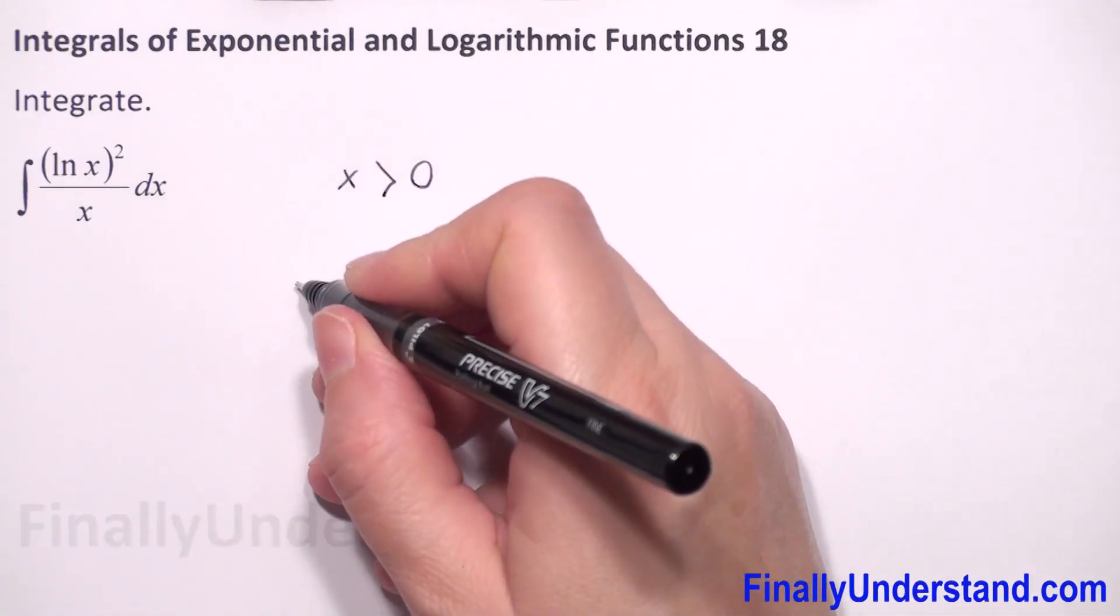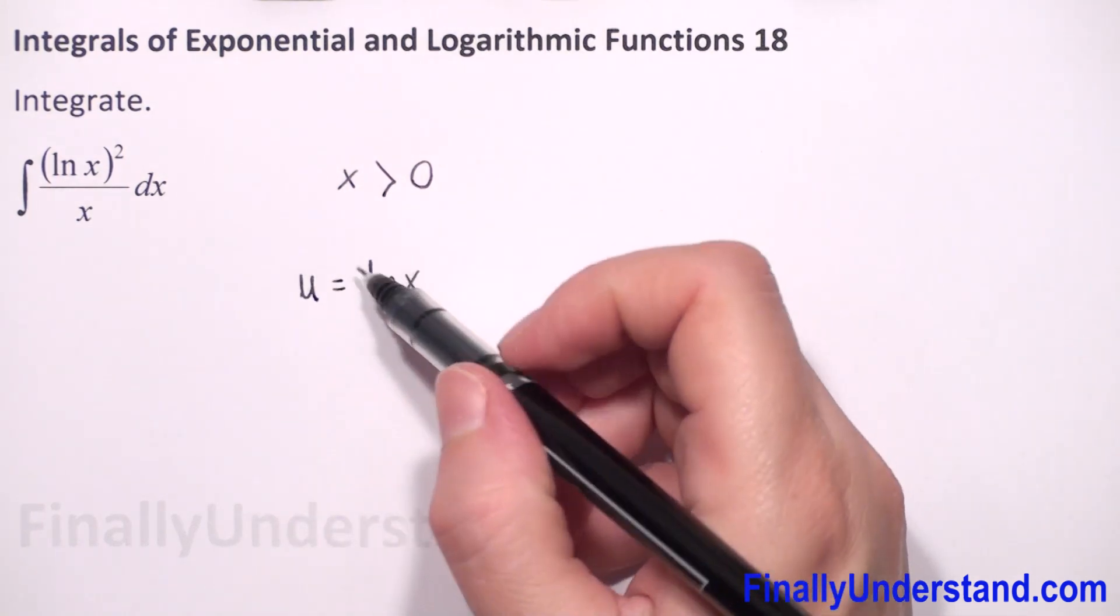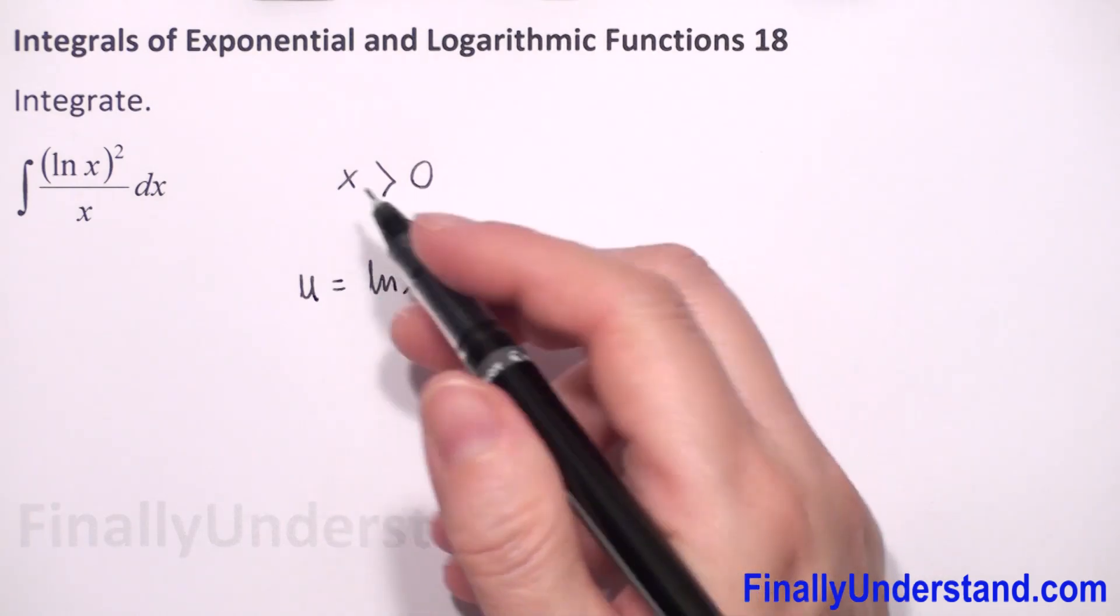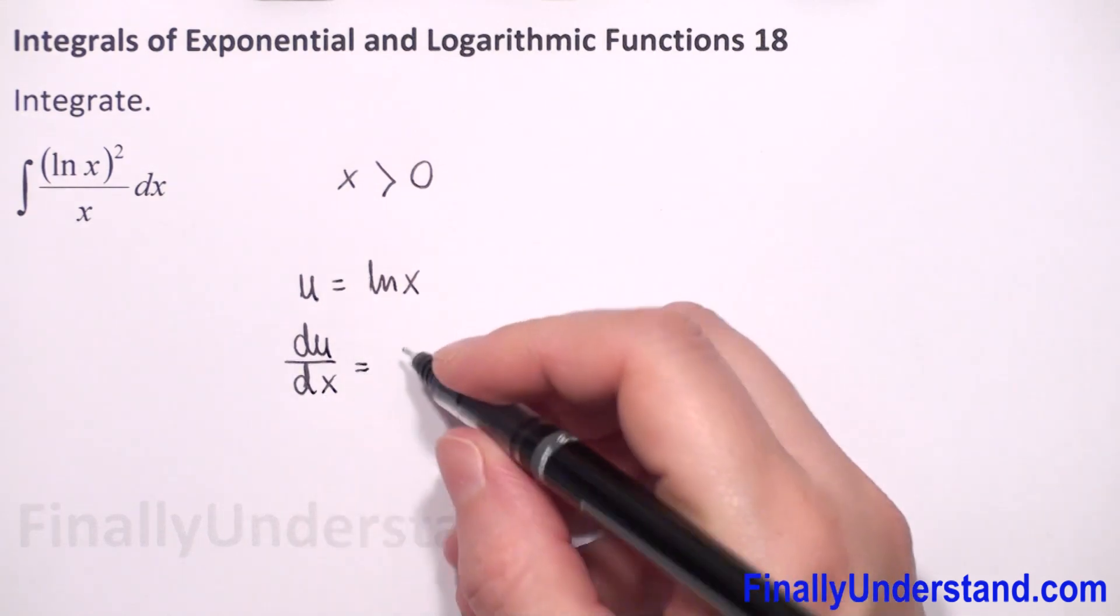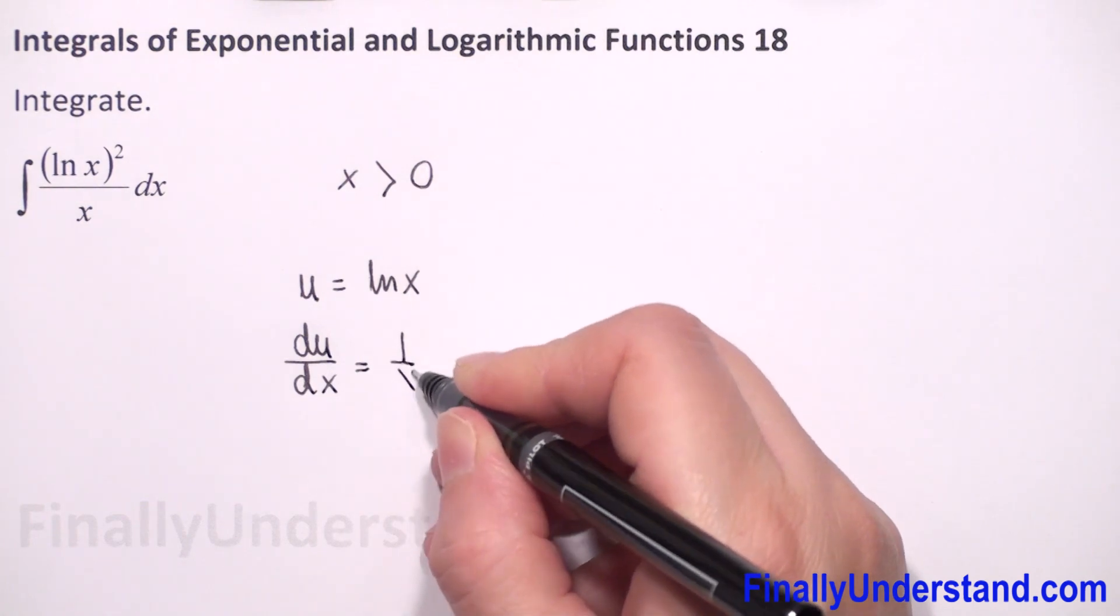So let u be equal to natural logarithm of x. Now we have to find the derivative of both sides of our equation with respect to x. So du/dx is equal to... the derivative of natural logarithm of x is 1 over x.